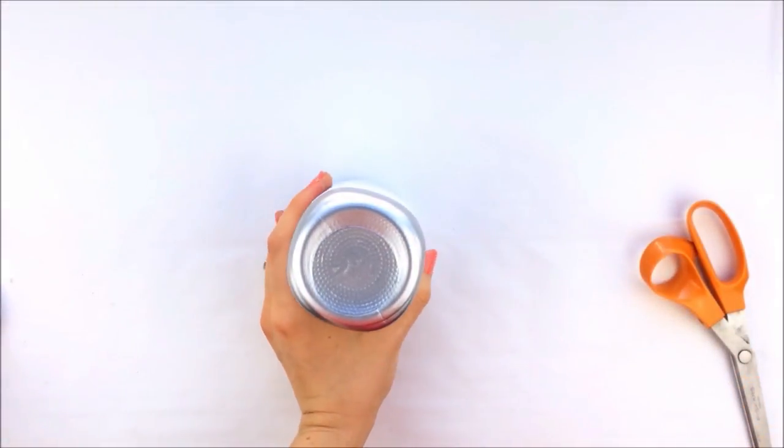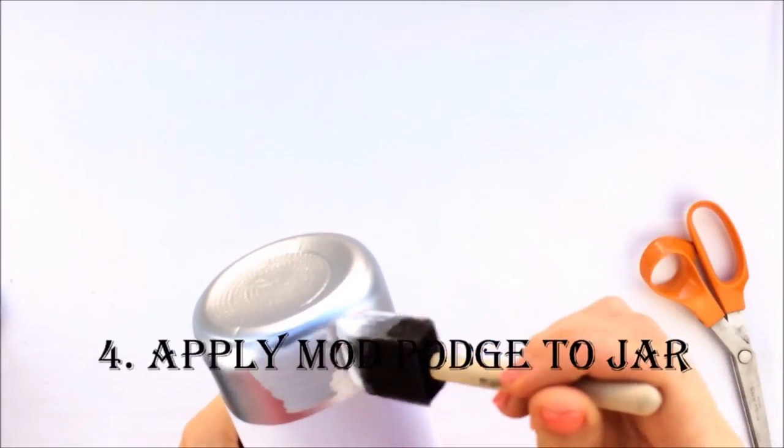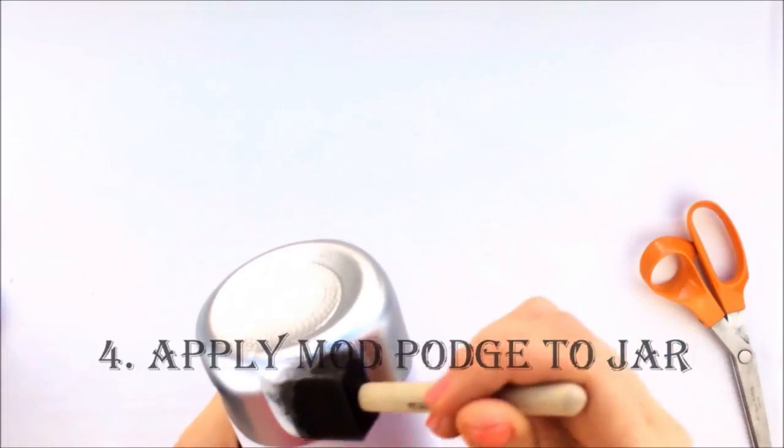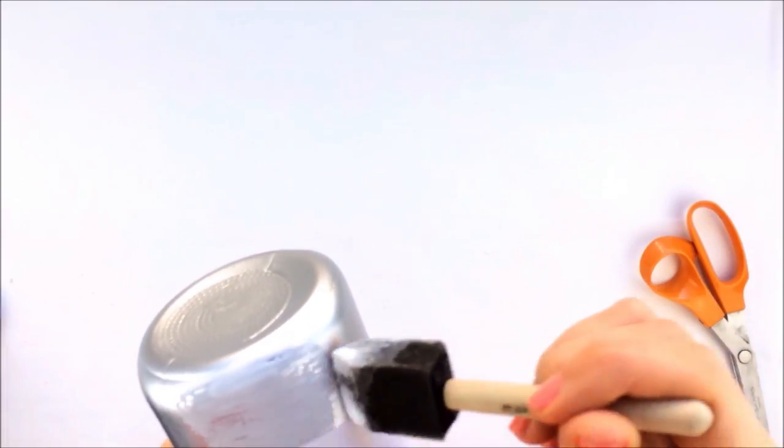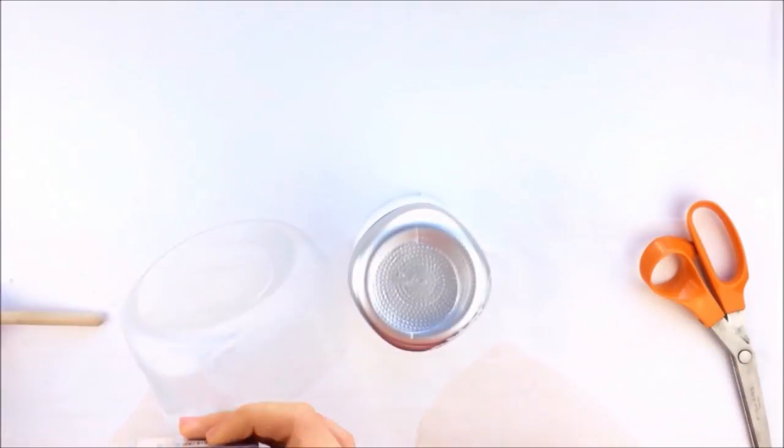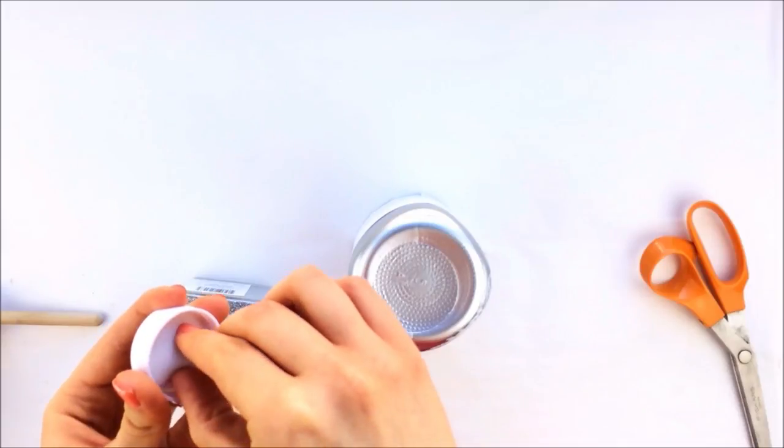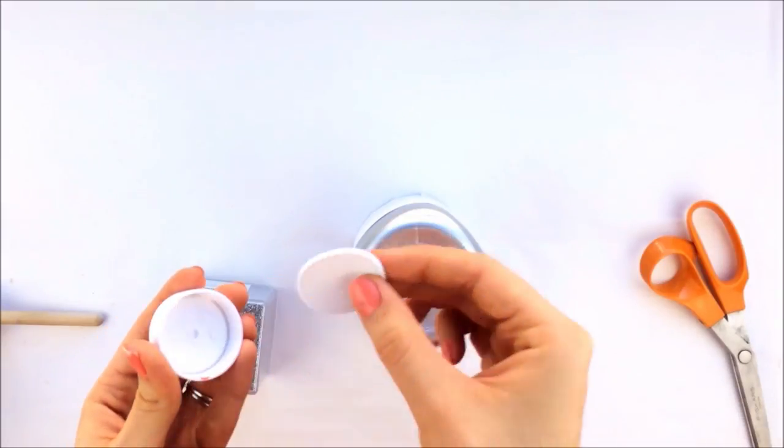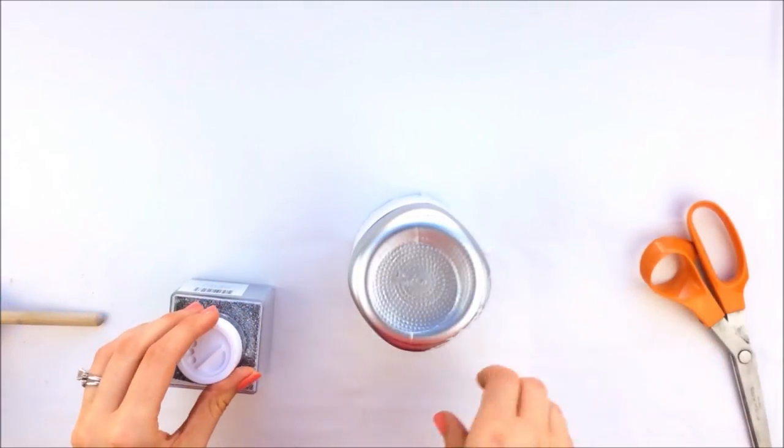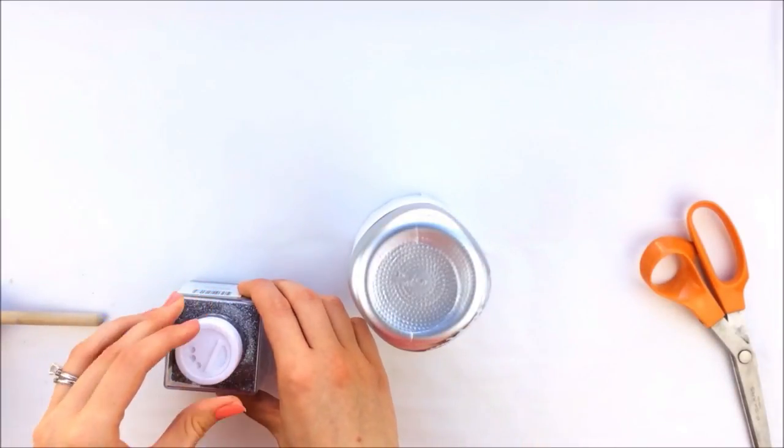Then you're going to want to apply a thin, evenly coated layer of mod podge around the mason jar. Before you add the glitter, make sure that you have something down on your surface for you to easily clean up afterwards. I have parchment paper on my desktop.